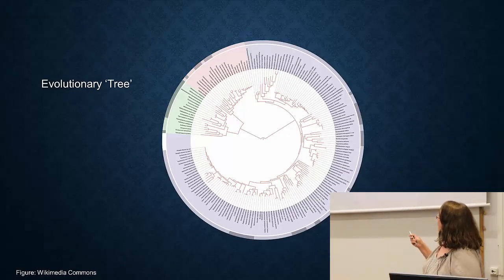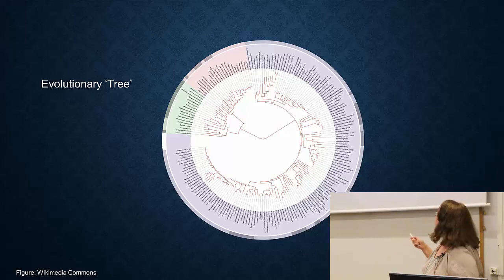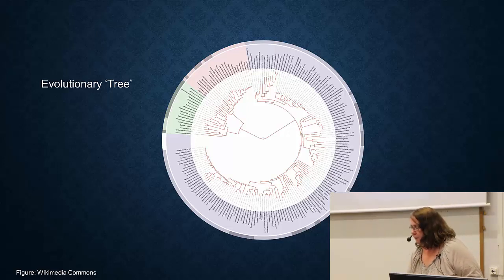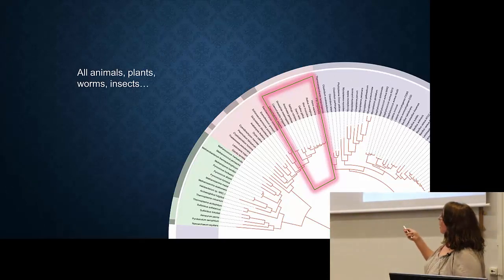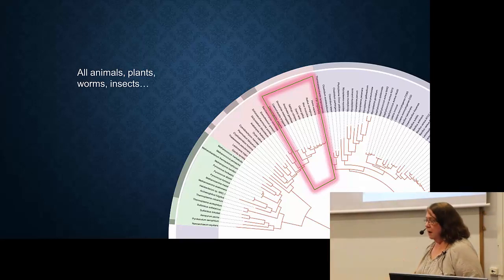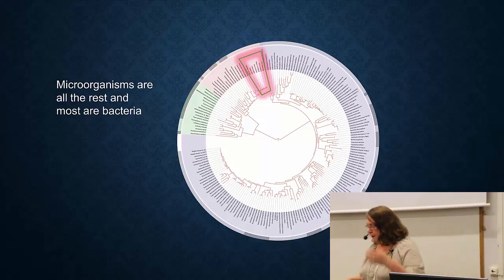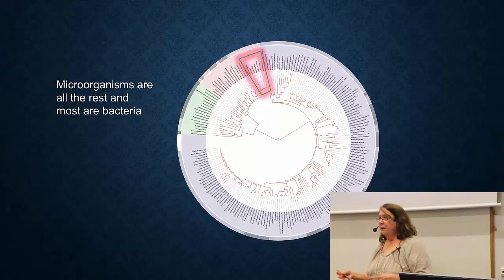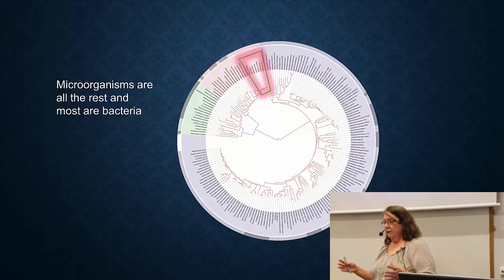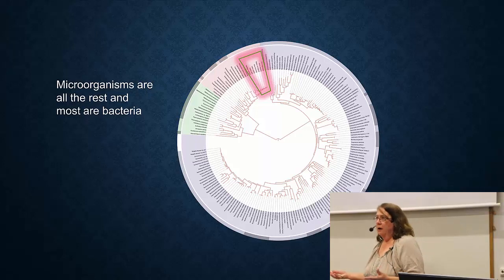On an evolutionary tree showing all types of species in the world, if you zoom in, one small branch includes all animals, plants, worms, and insects. Almost everything else is microorganisms, and everything in blue is bacteria. When we talk about microorganisms and bacteria, we're talking about huge diversity — so you'll hear me say 'most bacteria are like this' because I can't talk about all of them; there are always exceptions.